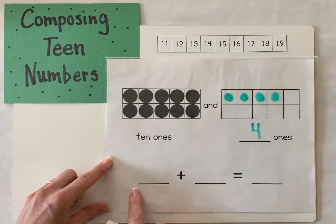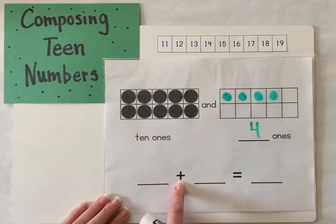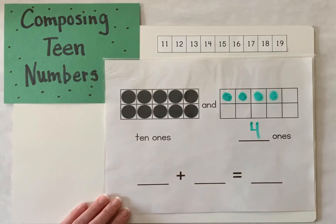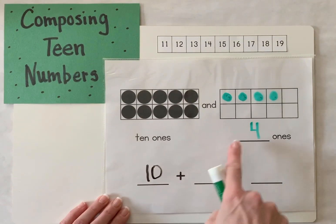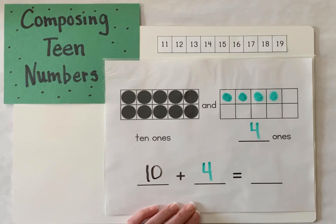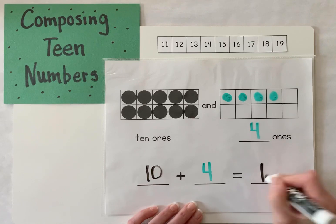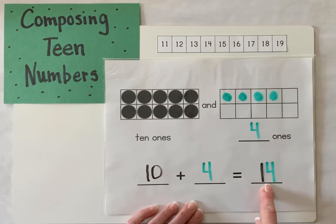So when we do that, we create an equation. Since we're joining our groups, we're using the addition sign. We have 10 ones, which is the number 10. 10 plus how many more ones? That's right — four ones. So when I join those numbers together, 10 plus 4 equals — I get my one group of 10 and my four ones, which creates my teen number called 14.